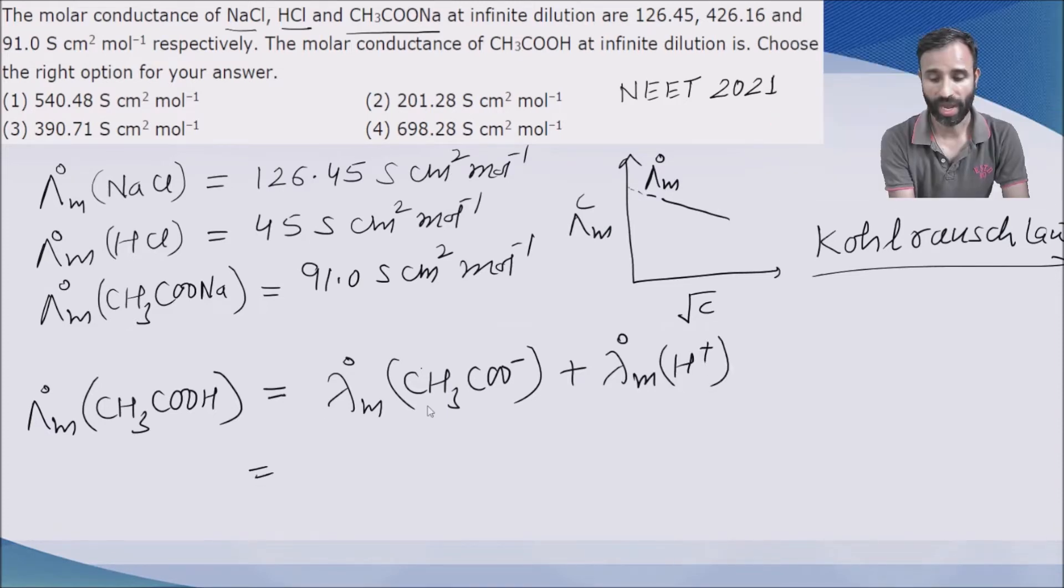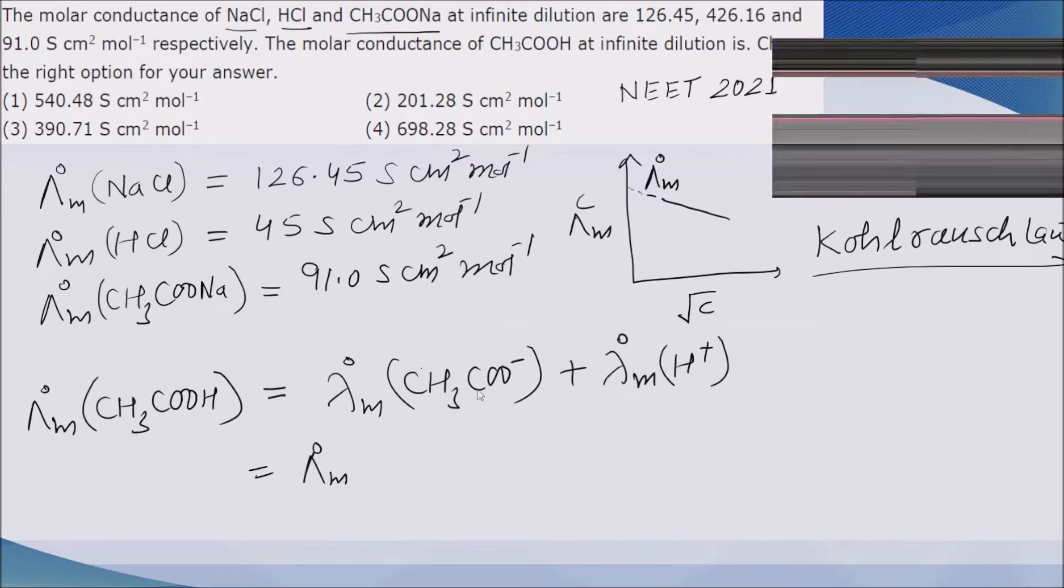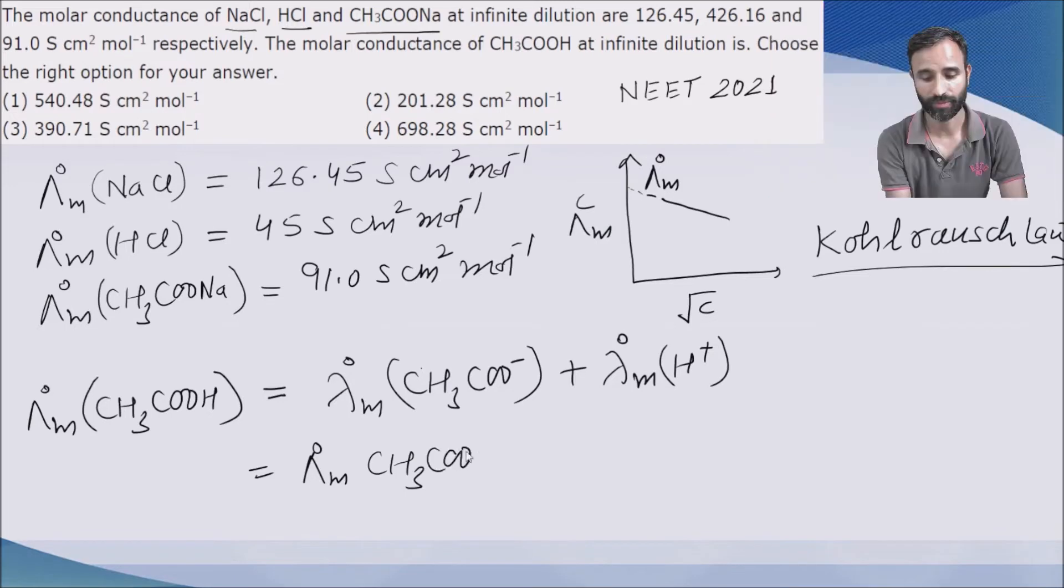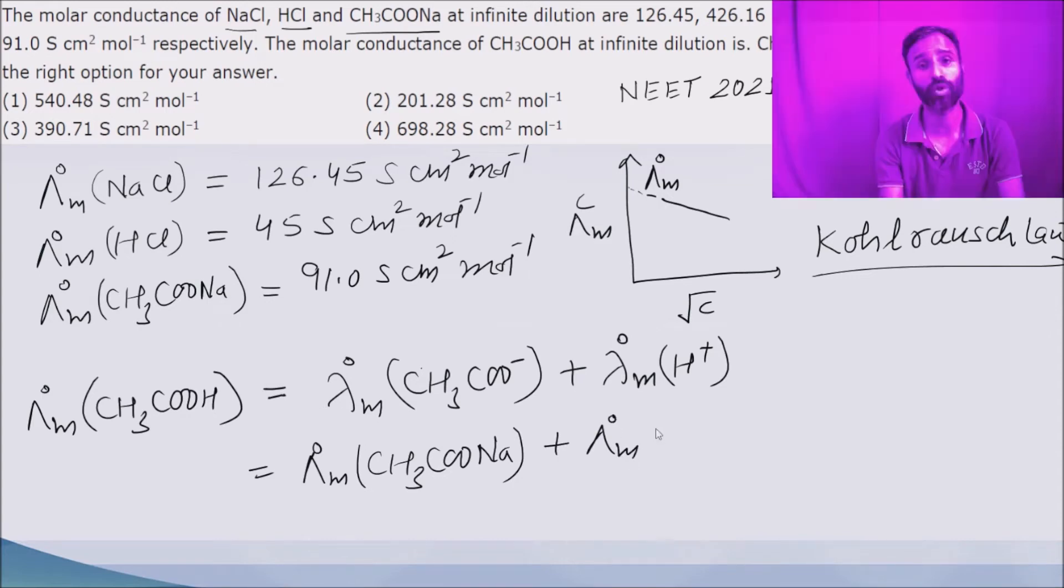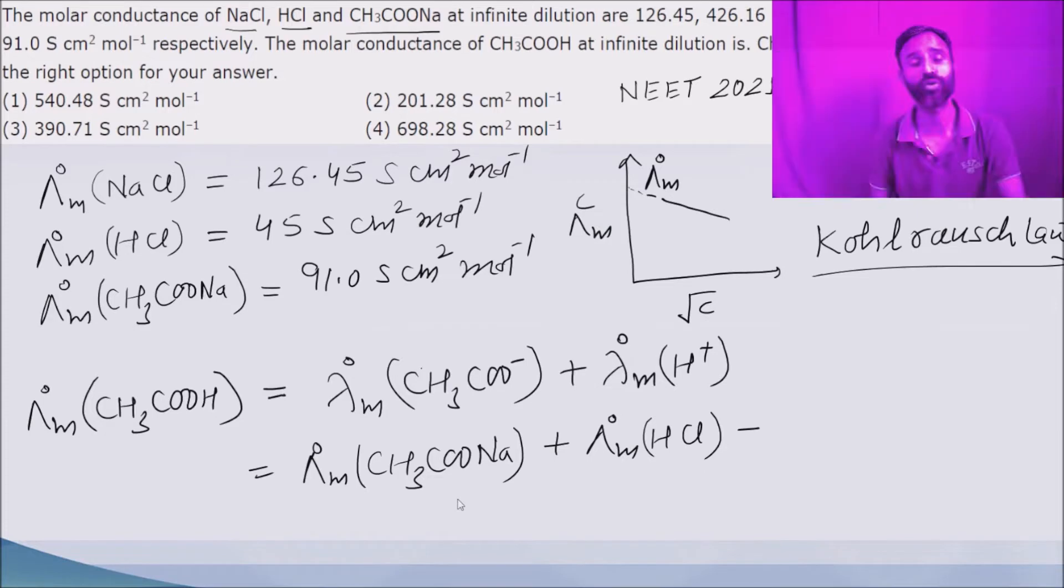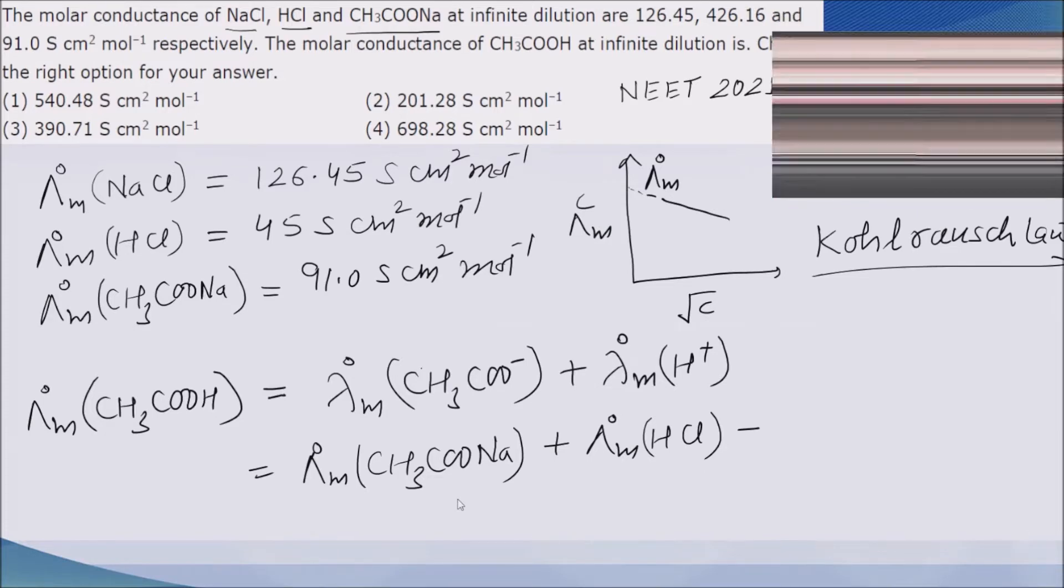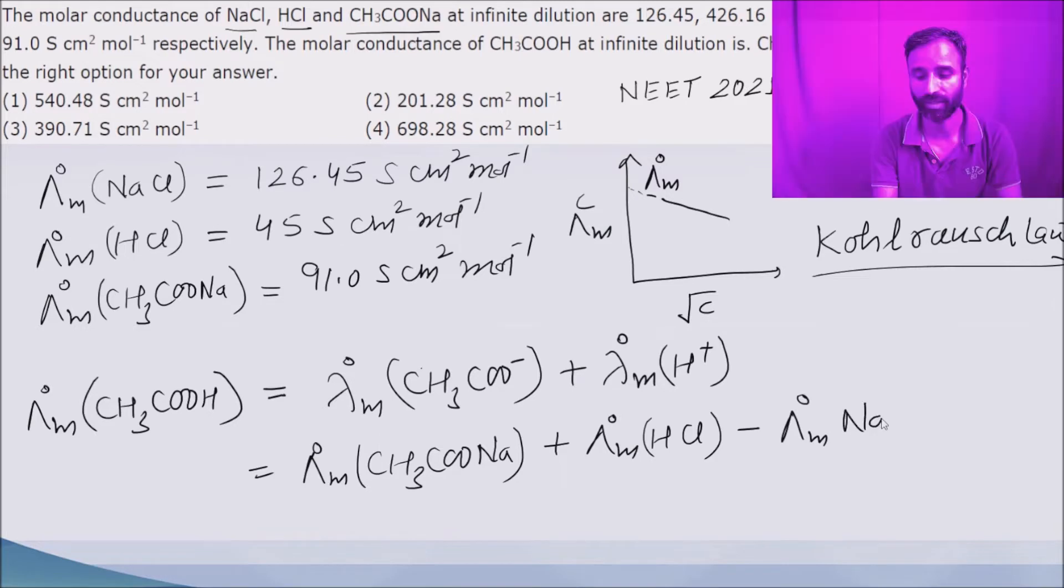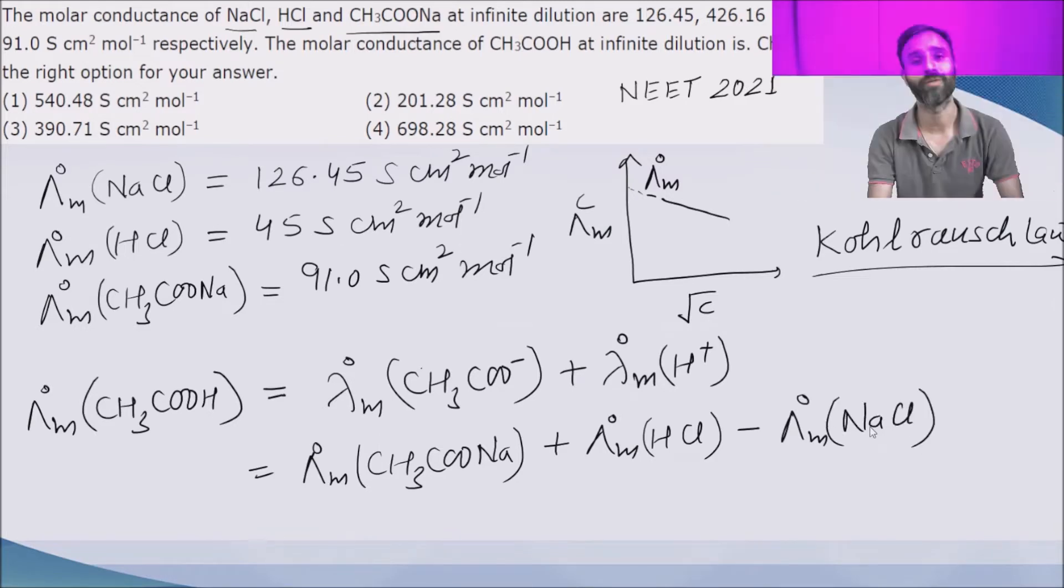So to have lambda m0 of acetate ion, we have sodium acetate. And to get the contribution of H plus, we have HCl. But extra contribution is of Na plus and Cl negative, so we have to subtract their contribution and that is NaCl. This is the equation.